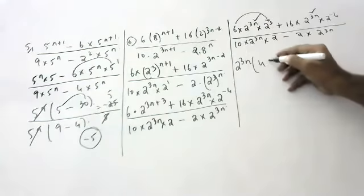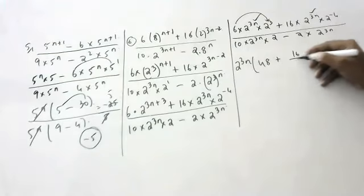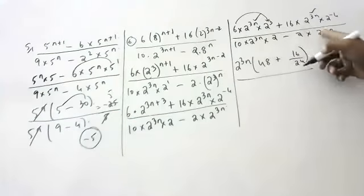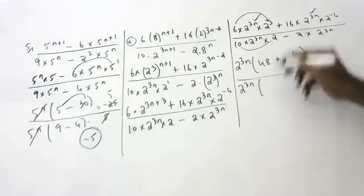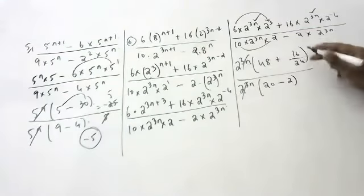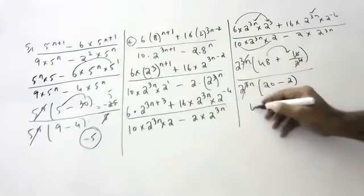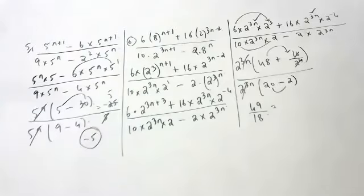Numerator: 8 plus 48 plus 16. Denominator: what is common? 2 to the power 3n. So 20 minus 2 in the denominator. 16 by 2 to the power 4 with 16. So 48 plus 1 equals 49. That's it. Thank you. Next video, next one.